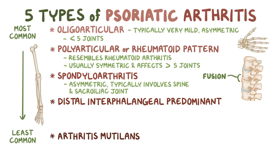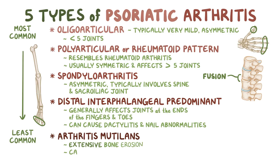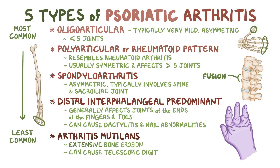The distal interphalangeal predominant type generally affects the joints nearest to the ends of the fingers and toes, causing sausage fingers or dactylitis, and nail abnormalities like ridging or pitting. Over time, some individuals with this type might develop severe bone erosions as well as finger deformities, leading to the final type — arthritis mutilans. The extensive bone erosion at the fingers causes a telescopic digit appearance, resulting in what's called the opera glass hand.